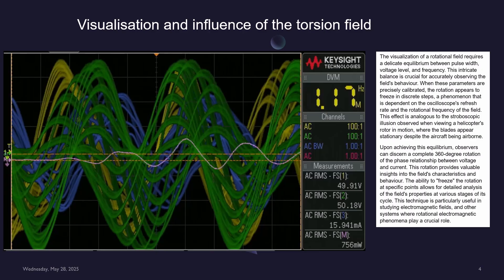This intricate balance is crucial for accurately observing the field's behavior. When these parameters are precisely calibrated, the rotation appears to freeze in discrete steps, a phenomenon that is dependent on the oscilloscope's refresh rate and the rotational frequency of the field.